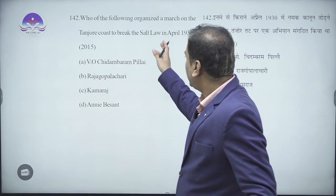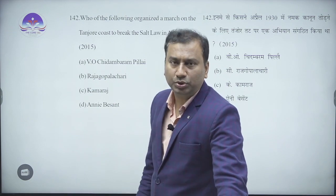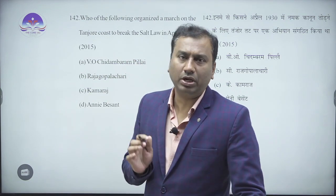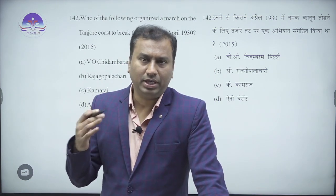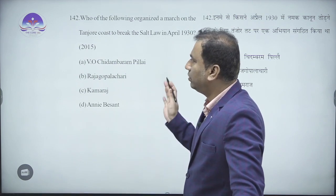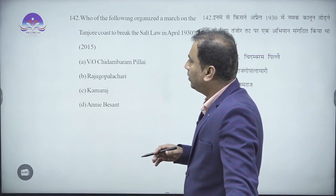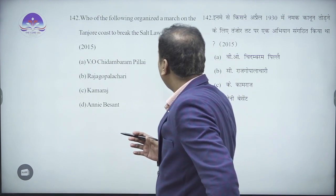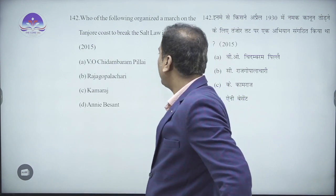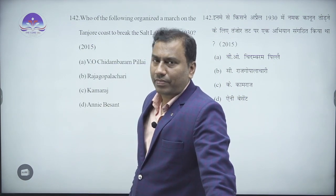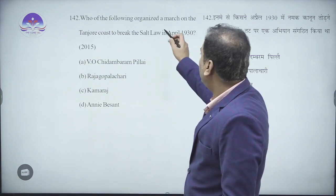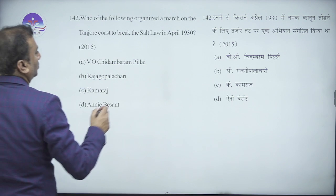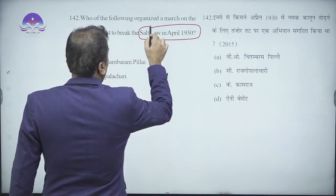The 2015 question is a directly factual, personality-based national movement question. The question asks: which of the following organized a march on the Tanjore coast to break the Salt Law in April 1930? This is a Civil Disobedience Movement question — that is a clue. The CDM word is not used here; instead, 'Salt Law' and 'April 1930' are the markers.